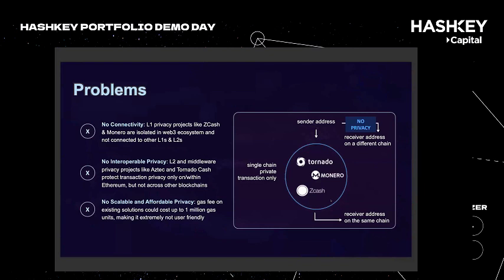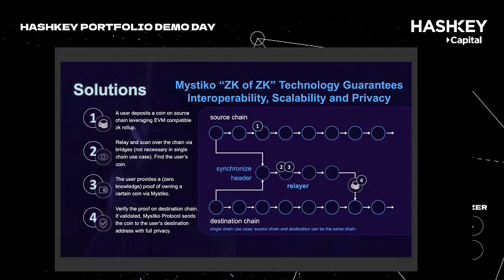We are using ZK technology to make sure that the whole transaction design of Mystical breaks the transaction link between the sender and the receiver. In this transaction design, there are many ways for participants to get engaged and also to generate and receive revenue in this protocol. For example, if you act as a ZK miner or a ZK relayer, you will be able to share transaction revenue in Mystical for each user.